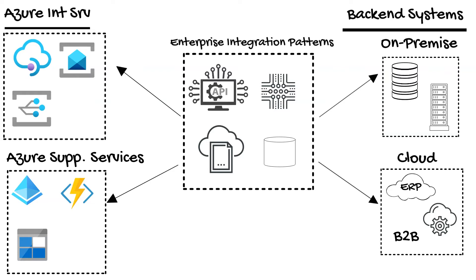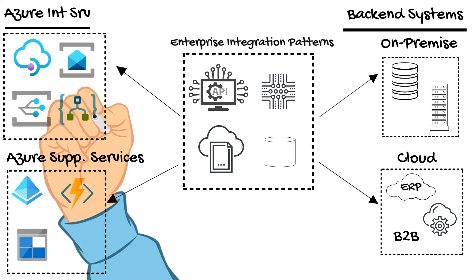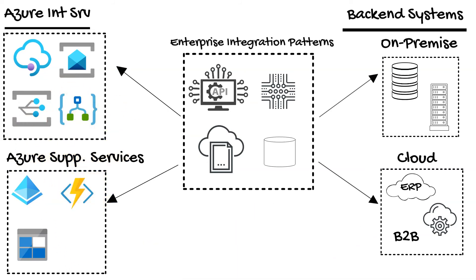So these patterns and technologies are all great, but how do you tie them all together to create orchestrations that mimic the business process workflows your organization needs? That's where the final core component of Azure Integration Services comes in: Azure Logic Apps. With Logic Apps, you can declaratively configure your workflows by selecting the right patterns and technologies for the scenario. You can also implement other messaging patterns like canonical data models and message translators, which we'll get into in future videos.